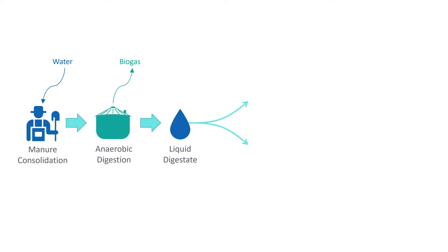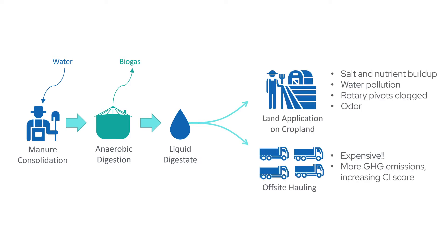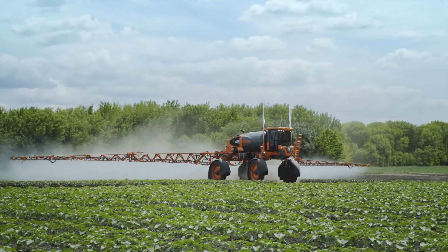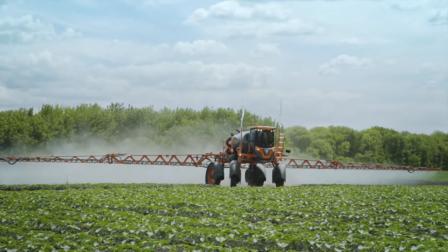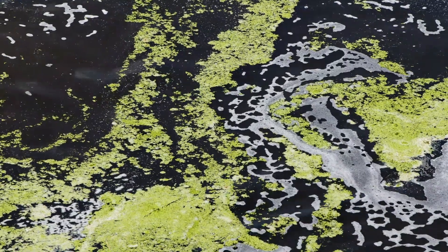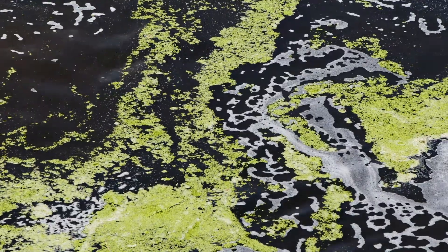There are two main options for where liquid digestate can go: spreading onto cropland, or hauling off-site to a location that can accept it. Due to the nutrients in the liquid digestate, there are limits to how much can be land applied. Too much and the salt and nutrient buildup will cause water pollution.